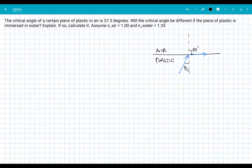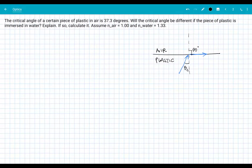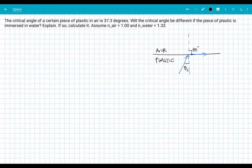So what they're telling us here is that we have a piece of plastic in air and the critical angle at that boundary is known to be 37.3 degrees. That's great information right there. Then the question is asking will the critical angle be different if we take the plastic and immerse it in water, and if so, let's calculate that. They give us some values for the n value of air and water.